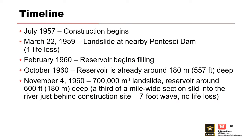A quick timeline: construction started in the late 1950s. By 1959, at a nearby project, Ponsei Dam, there was a landslide that went into the reservoir, creating about a 65-foot wave and resulting in one life loss. Leading up to this point, they had considered some of the risk to an extent. Things were brought to Carlos's attention — such as this looking like an ancient landslide location — and he essentially said, no big deal, keep moving.